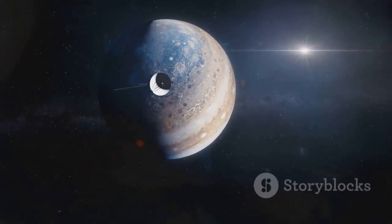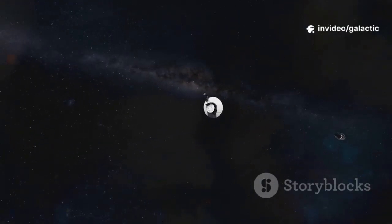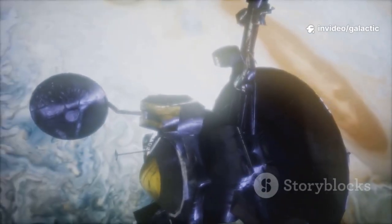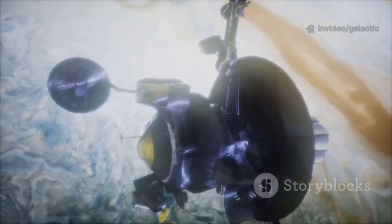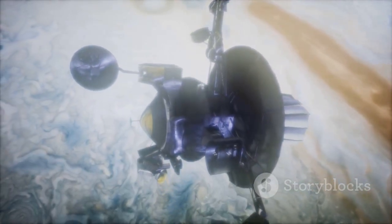Its original job, a grand tour of the outer planets—Jupiter, Saturn, Uranus, and Neptune—was made possible by a rare planetary alignment that occurs only once every 176 years, allowing Voyager 2 to use gravity assist to slingshot from one planet to the next.